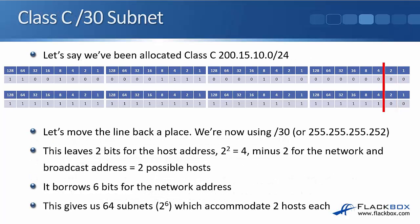Next up, we're going to move the line back a space — we're going to create a slash 30 now. The subnet mask in dotted decimal is 255.255.255.252. That and slash 30 both mean the same thing. That is going to leave two bits for the host address. 2 to the power of 2 is 4, minus 2 for the network and the broadcast address, that gives us two possible hosts.